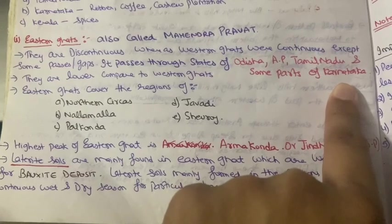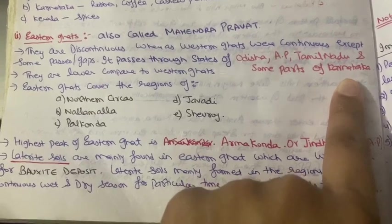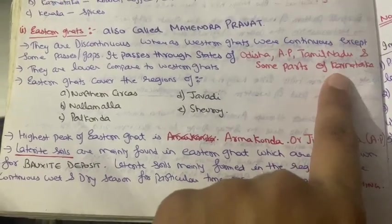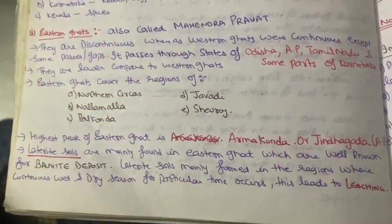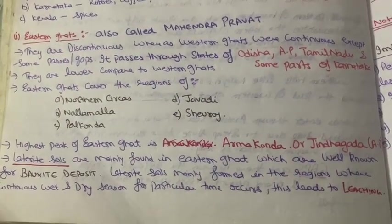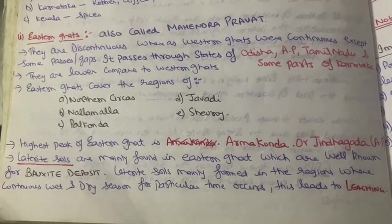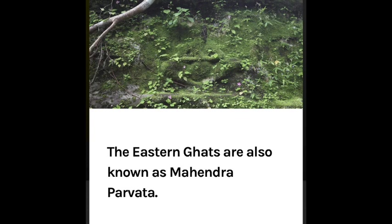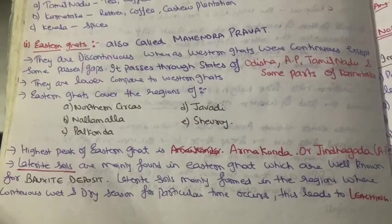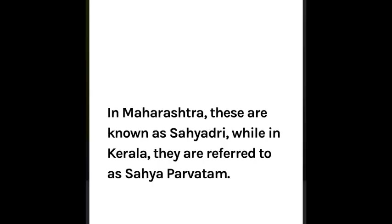Remember, we discussed that Karnataka lies in the Western Ghats, but some parts of Karnataka are geographically included in the Eastern Ghats. You should know which states the Eastern Ghats pass through. It is also called Mahindra Parvat — this is important. Just as Western Ghats have different names (like Sahyadri in Maharashtra), the Eastern Ghats are known as Mahindra Parvat.